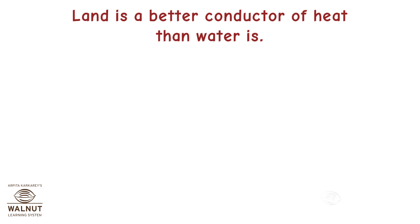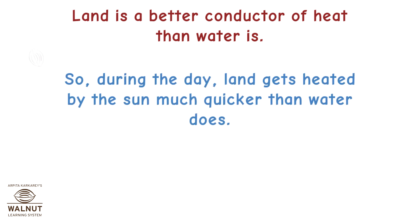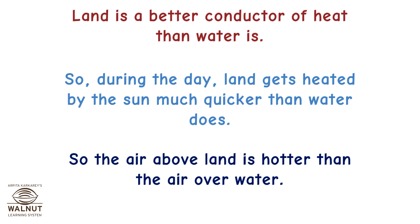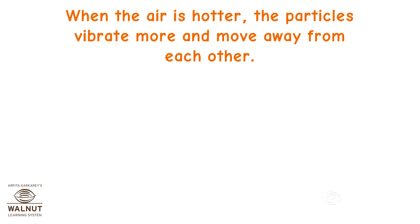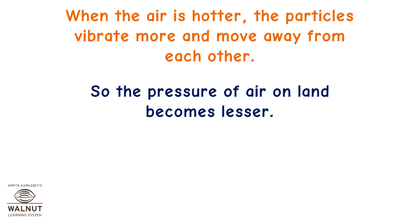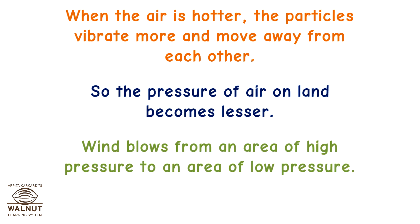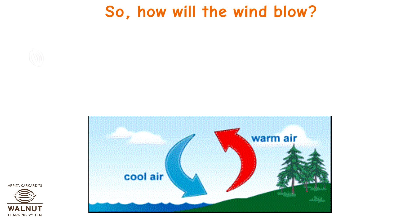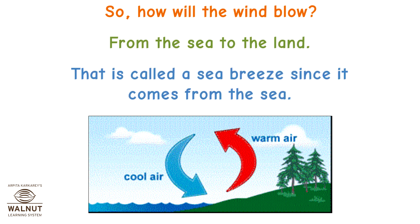Land is a better conductor of heat than water is. So during the day, land gets heated by the sun much quicker than water does. The air above land is hotter than the air over water. When the air is hotter, the particles vibrate more and move away from each other, so the pressure of air on land becomes lesser. Wind blows from an area of high pressure to an area of low pressure — so the wind blows from the sea to the land. That is called a sea breeze since it comes from the sea.